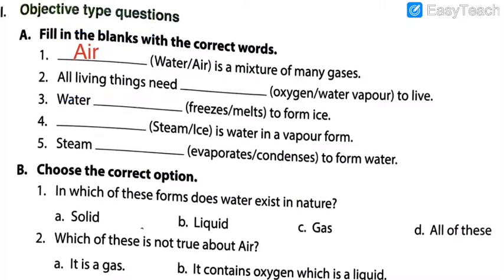Next: all living things need dash to live. Options are oxygen or water vapor. All living things means trees, human beings, animals — we all are living things. So what do we need? What does a human being need to survive, to live? Do we need oxygen or water vapor to live? The answer is pretty easy — we need obviously oxygen. So oxygen is the correct answer. I hope that you too are writing it down.